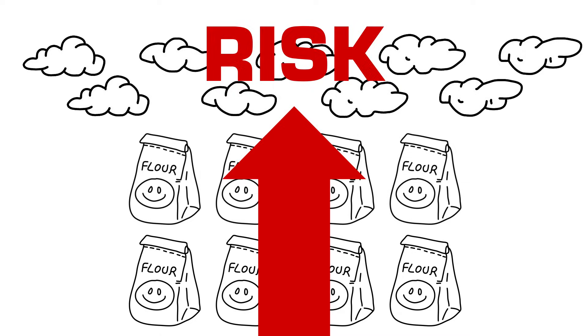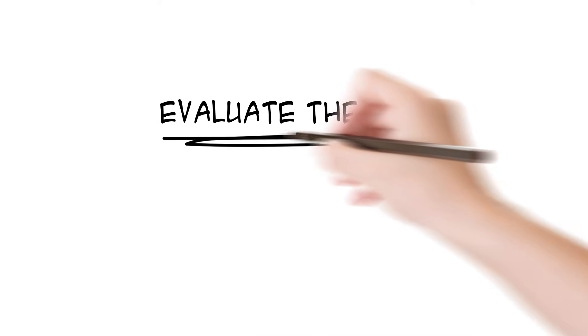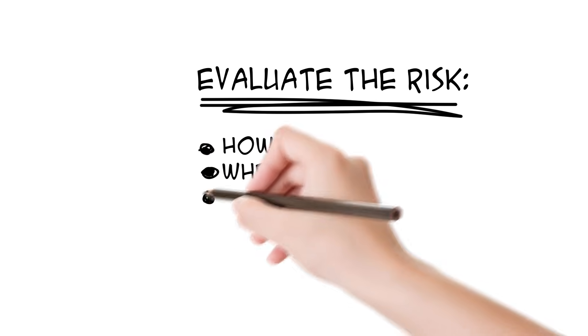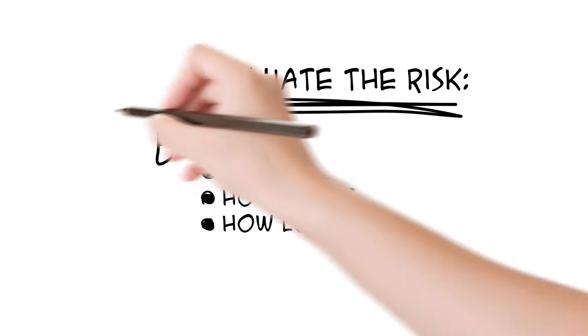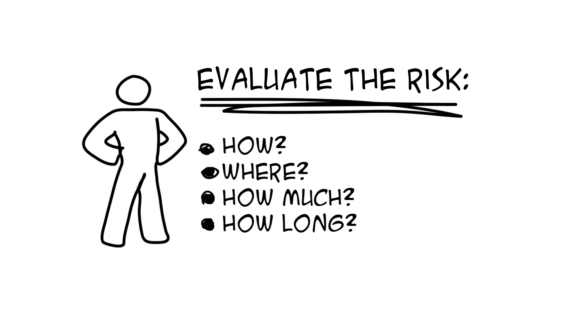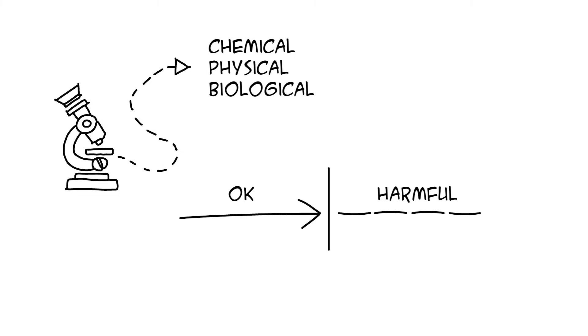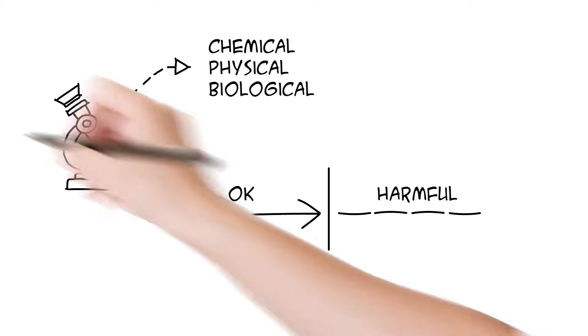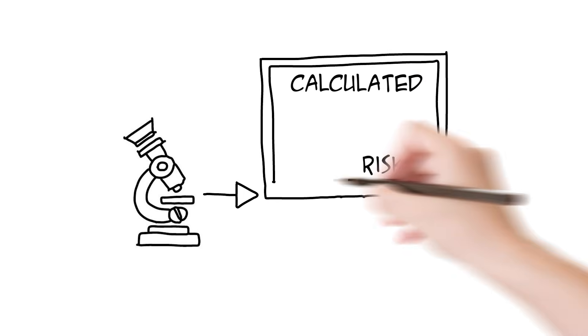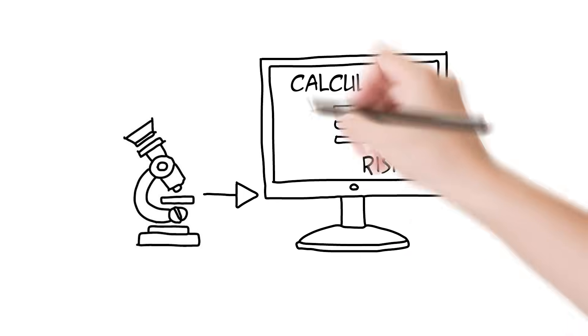Risk is always a probability, influenced by the level of exposure. To evaluate the risk, we have to take many factors into consideration. How, where, how much and how long one can be exposed to the hazard are all things to be taken into account. Toxicological research can map the potentially harmful properties of a product, be it chemical, physical or biological, and it can also set a limit under which exposure will have no effect. Based on this research, a risk can be calculated based on frequency, conditions and length of exposure.